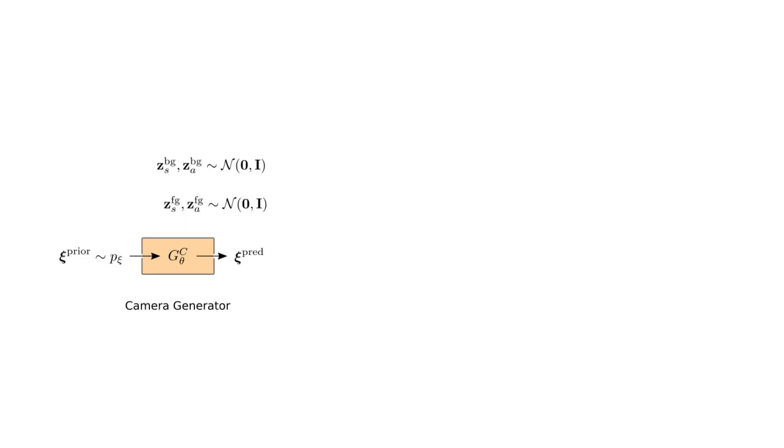Next, we use the sample prior camera pose as input to our camera generator, which predicts a predicted pose. The 3D-aware image generator then gets the latent codes as well as the predicted pose as input.